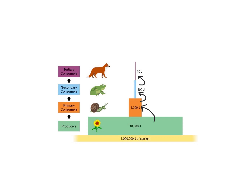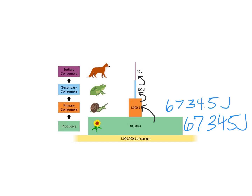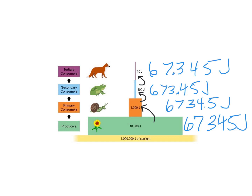Notice all we did was move the decimal point. If I had 67,345 joules, I would just move the decimal point one place — so the next level gets 6,734.5 joules. And for the level after that, I'd move it one more place. You're doing 10%, so you're just moving the decimal point over, which makes it really easy to calculate without needing a calculator. Thank you for watching.